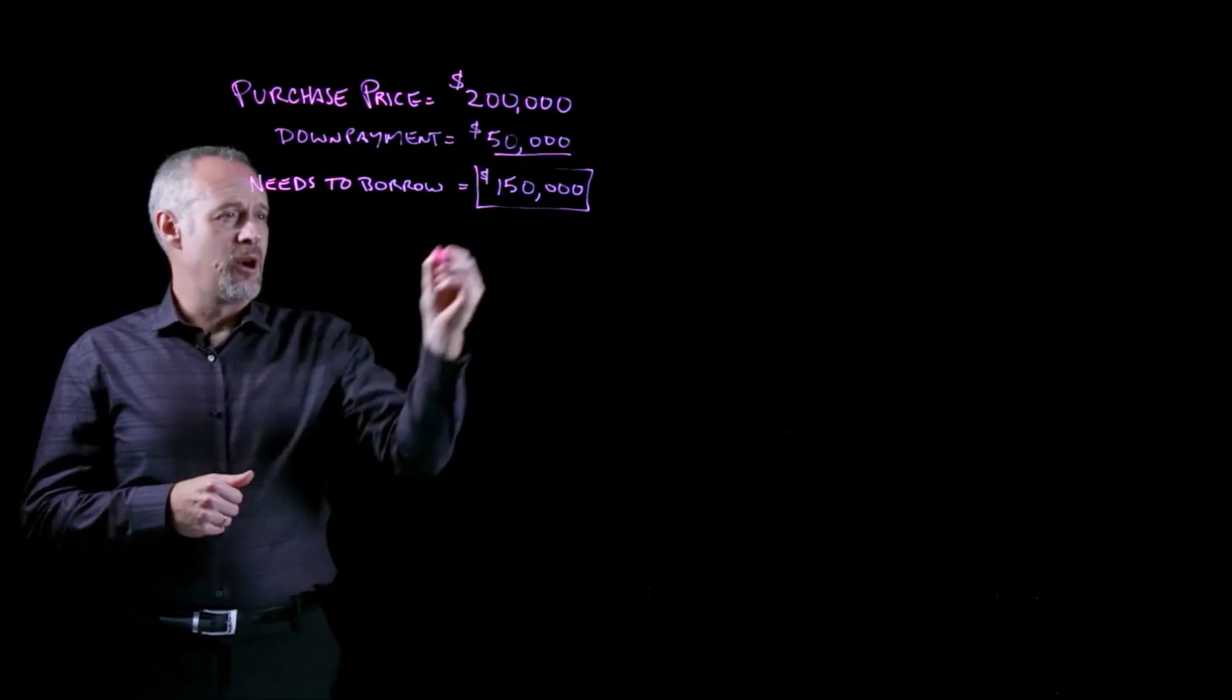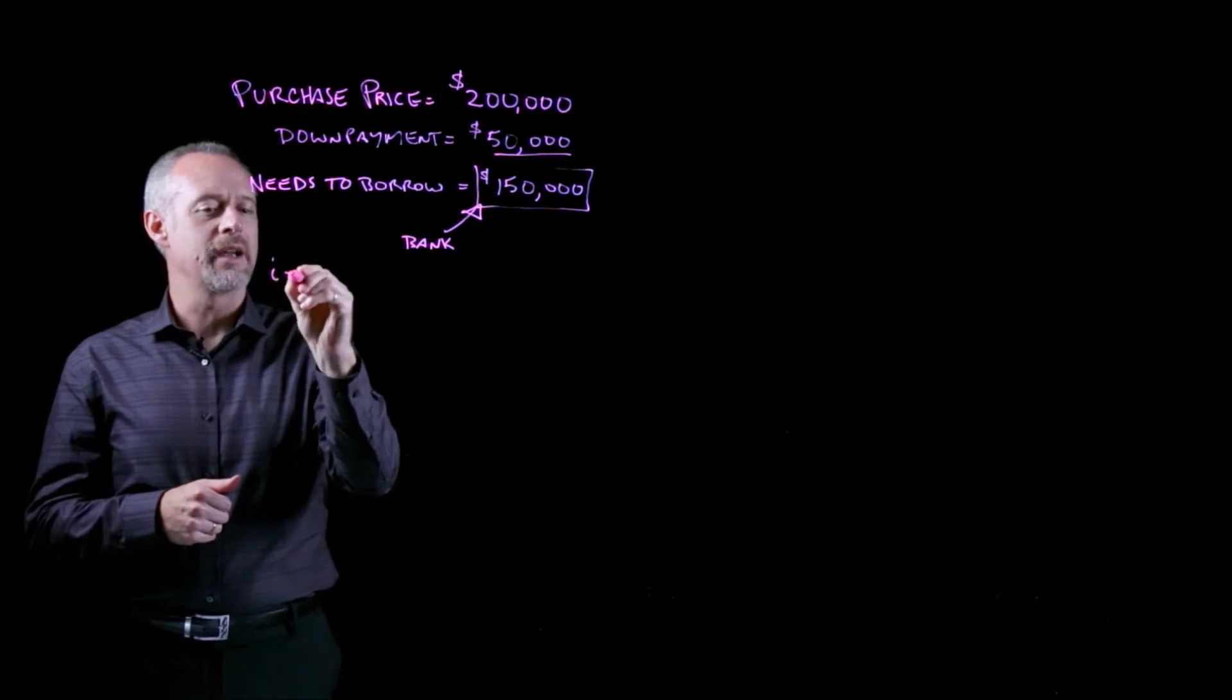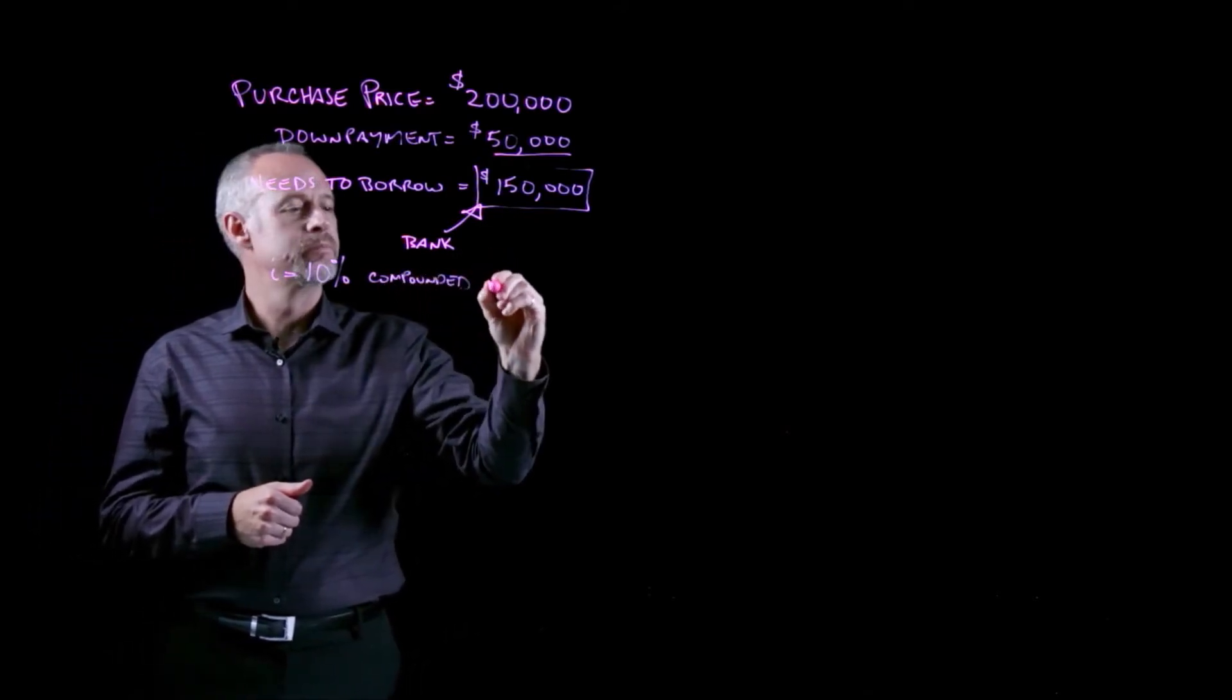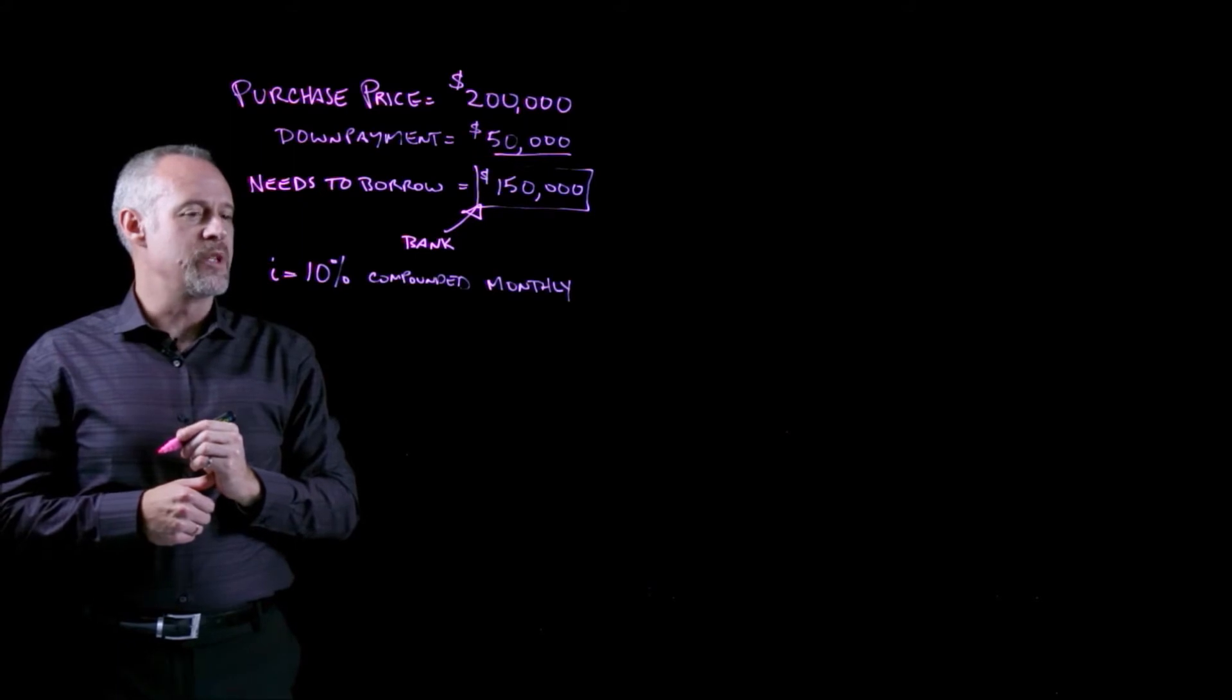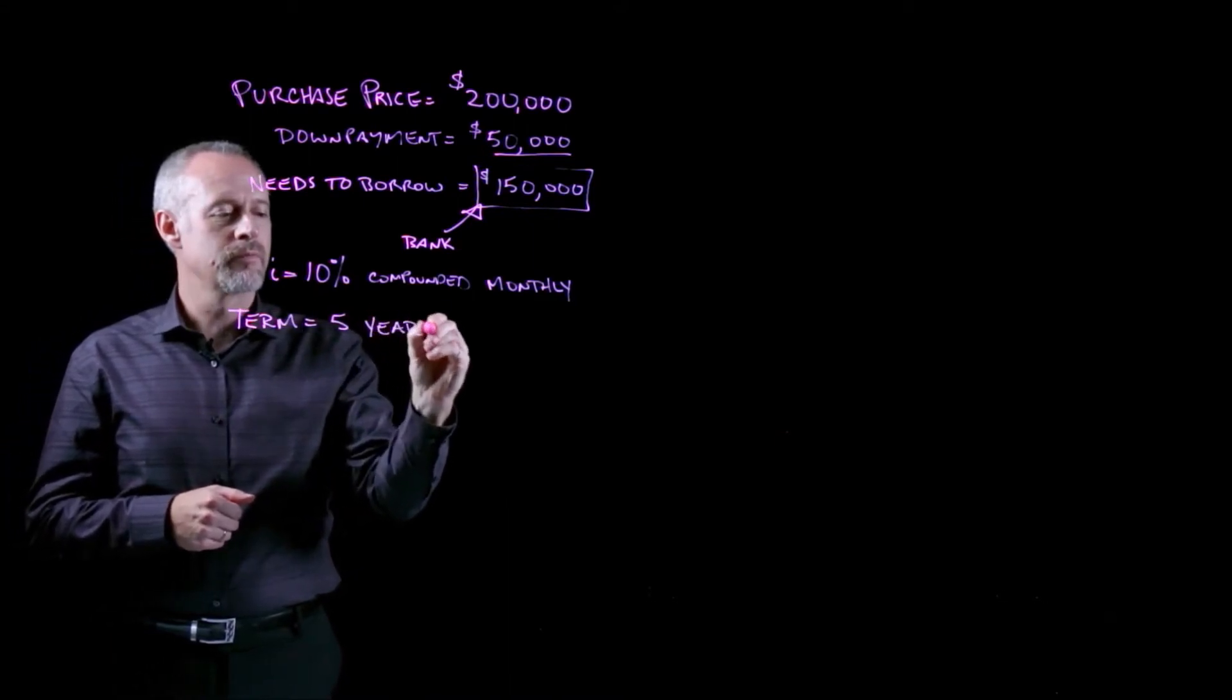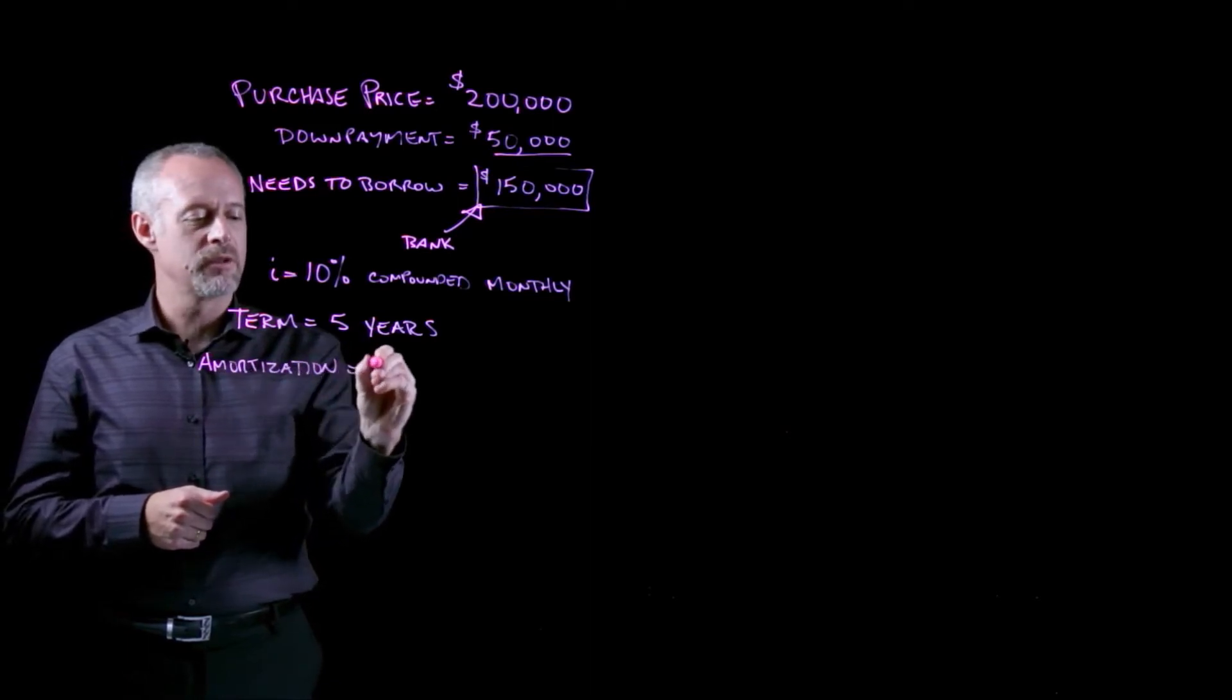The problem actually calls this $50,000 a down payment. A down payment is a word that's commonly used for large purchases, and that means this is the amount of cash that he has, and he can actually reduce the amount of money he borrows because he already has this amount for a down payment. So what he actually needs to borrow is $150,000, and this will be the amount that we call the mortgage. This $150,000 comes from, most often, a bank. We're told in the problem that the bank is willing to offer an interest rate, I, of 10% compounded monthly. We are also told that the term of the mortgage is five years, and the amortization period is 10 years.